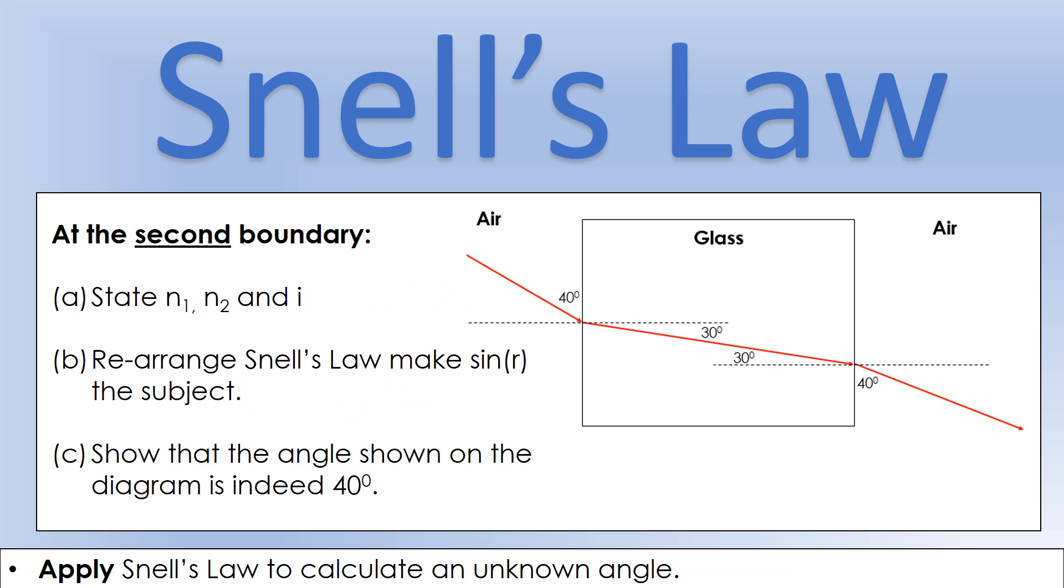We're going to look at a slightly different problem. We're going to use Snell's law to calculate an unknown angle. We're now going to look at the second boundary, the glass to air boundary on the right hand side. Pause the video and have a go at these three questions.